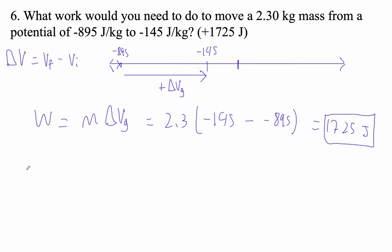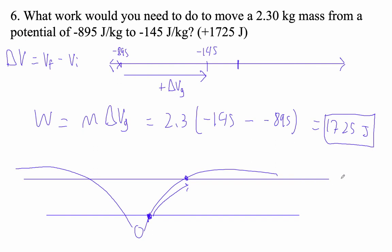So it could be that we have like a gravity well here. All right, negative 895 is really close to this mass, and we moved it to a place where it's negative 145. So here it's negative 895, and here it's negative 145. And here's zero. Zero would be infinitely far from this mass.